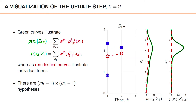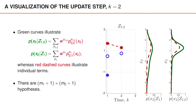Let us visualize the equations to make things more concrete. The green curves show the predicted density at time 2 and the posterior at time 2. In this case, the predicted density contains three hypotheses since we have two measurements at time 1. Since we only have one measurement at time 2, we have two possible associations at time 2: either the object was detected or it was undetected. This gives us six possible sequences of associations that we need to consider, and we can visualize how the different sequences contribute to the overall posterior.